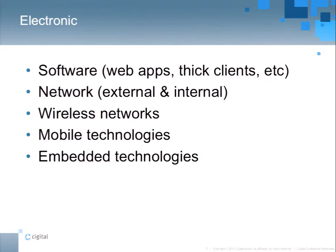Some of the things to consider in the electronic sphere: obviously we have software — web apps, thick clients, mobile applications — all handling whatever sensitive data your organization is there to protect. You've got network stuff — maybe your stuff is in Amazon on AWS, or you have your internal network, your external network infrastructure, wireless networks at your offices. All that stuff connects and is intertwined to support your organization. You've also got mobile technologies and embedded technologies — all this stuff may come into play in conducting these kinds of assessments.